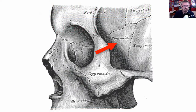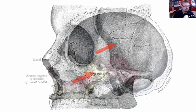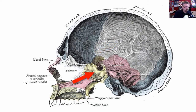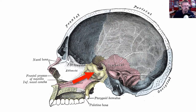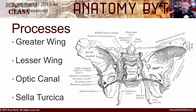Taking a look at the sphenoid bone from different points of view: here you see the sphenoid bone on the side of the skull, where it comes out and forms part of the side of the skull. Taking the skull and cutting it down the middle, you can see the sphenoid bone from that point of view. There are processes you need to be aware of when looking at the sphenoid bone — for example, the greater wing, the lesser wing, the optic canal, and the sella turcica.